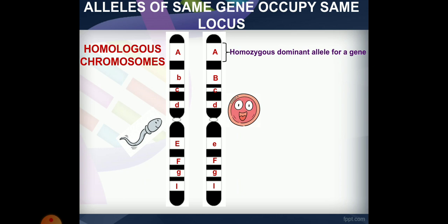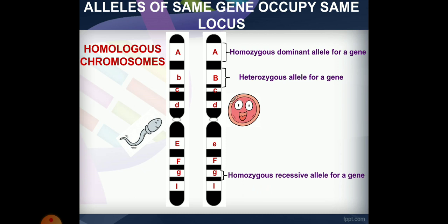When an organism has the same genotype at a locus, it is homozygous — it can be homozygous dominant or homozygous recessive. When an organism has two different alleles, such as B and small b, it is heterozygous.